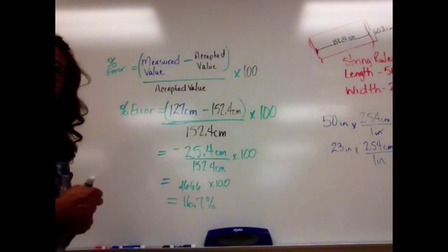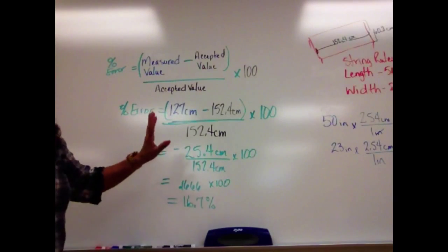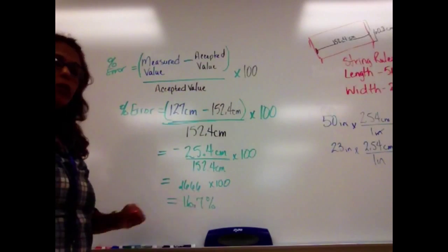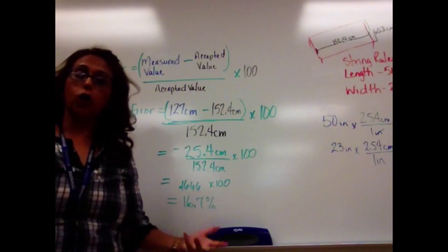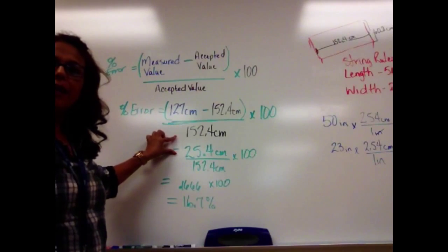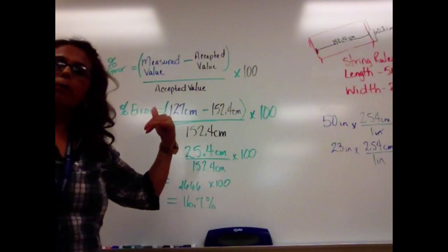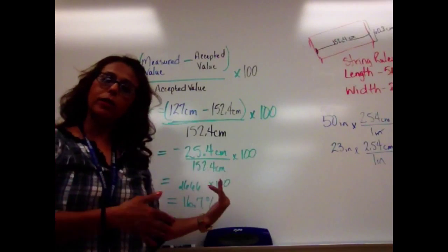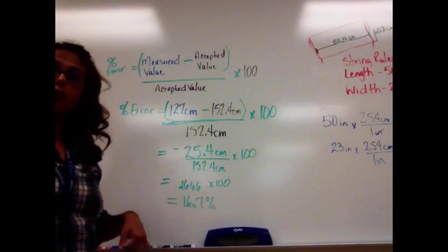That tells me that my measured values compared to the actual value is 16.7 percent incorrect. Now, this top number was negative. That negative here tells me it was below the actual number. If it's positive, then your number's too big. In this case, my value is too small.